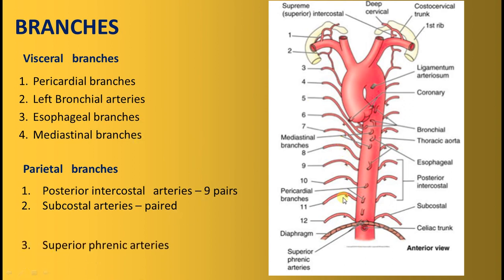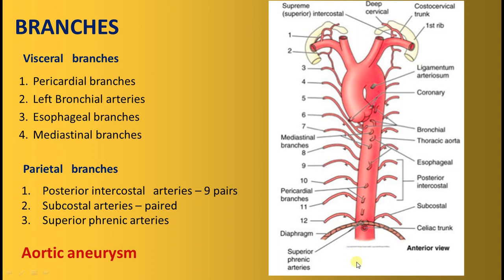Applied anatomy of the descending thoracic aorta: the last branch is the superior phrenic artery, while the first branch of the abdominal aorta is the inferior phrenic artery. Aortic aneurysm is an abnormal dilatation of the aorta and can occur anywhere, though it is most common in the abdominal part, with the thoracic part being second. It may also lead to aortic dissection, which is tearing of the vessel wall.